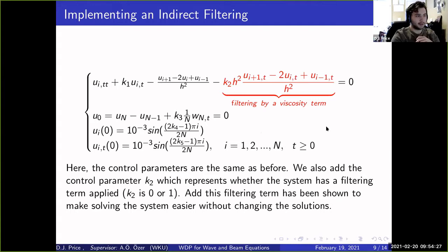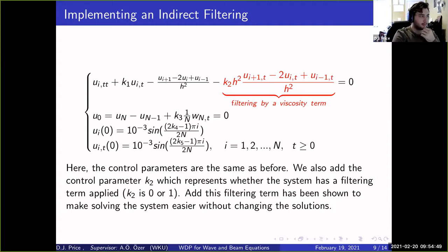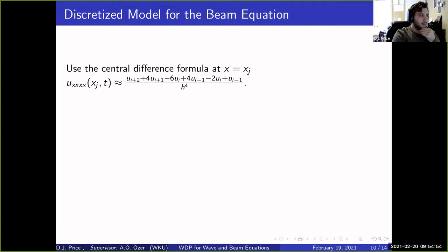We can add on the filtering term — this is where the K₂ parameter comes in. K₂ is either 0 or 1, representing whether we are filtering the equation or not. I'll show you later the advantage of having K₂ set to 1 versus 0, and how much it helps solve the equation. For the beam, we use central difference to approximate the fourth spatial derivative.